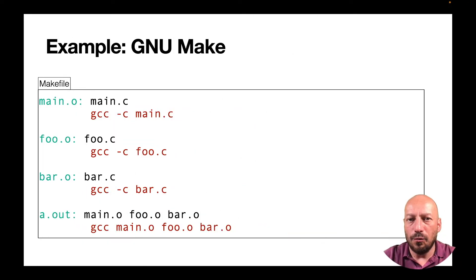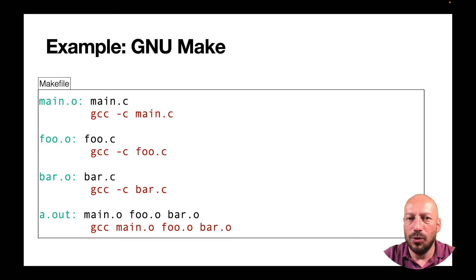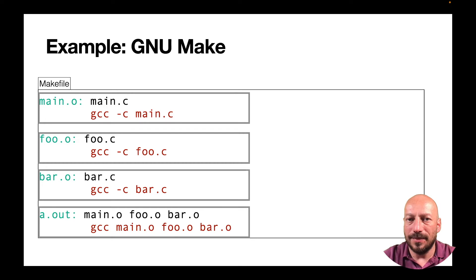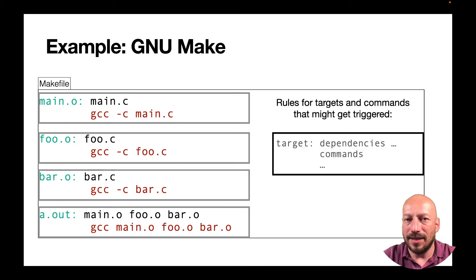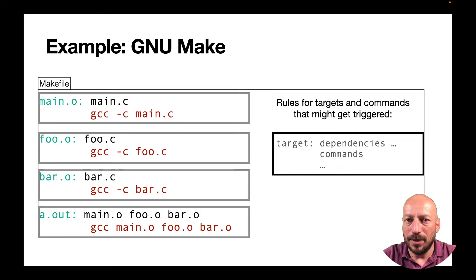These rules about when to rebuild certain things — object files or executables — can be written down in a programming language understood by a tool. The tool we will use is GnuMake. A GnuMake program has rules: each rule has a first line with a target on the left of the colon and a list of dependencies on the right. GnuMake compares timestamps — if one dependency is newer than the target, the rule is triggered and the commands that follow are executed.